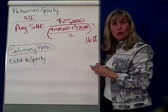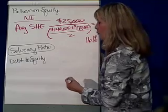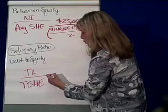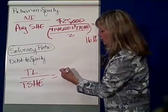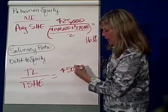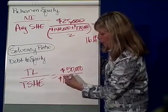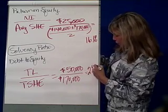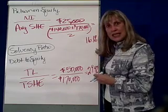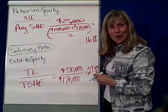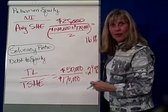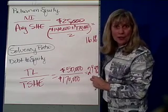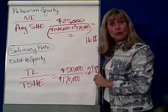The last ratio is called the solvency ratio, which answers the question: who owns the company? It's total liabilities over total stockholders' equity. Total liabilities were $50,000 and total stockholders' equity was $170,000, giving us 29.4%. As long as the debt-to-equity ratio is less than one, the stockholders own the company. If it goes above one, the creditors have a bigger say. So that's ratio analysis.